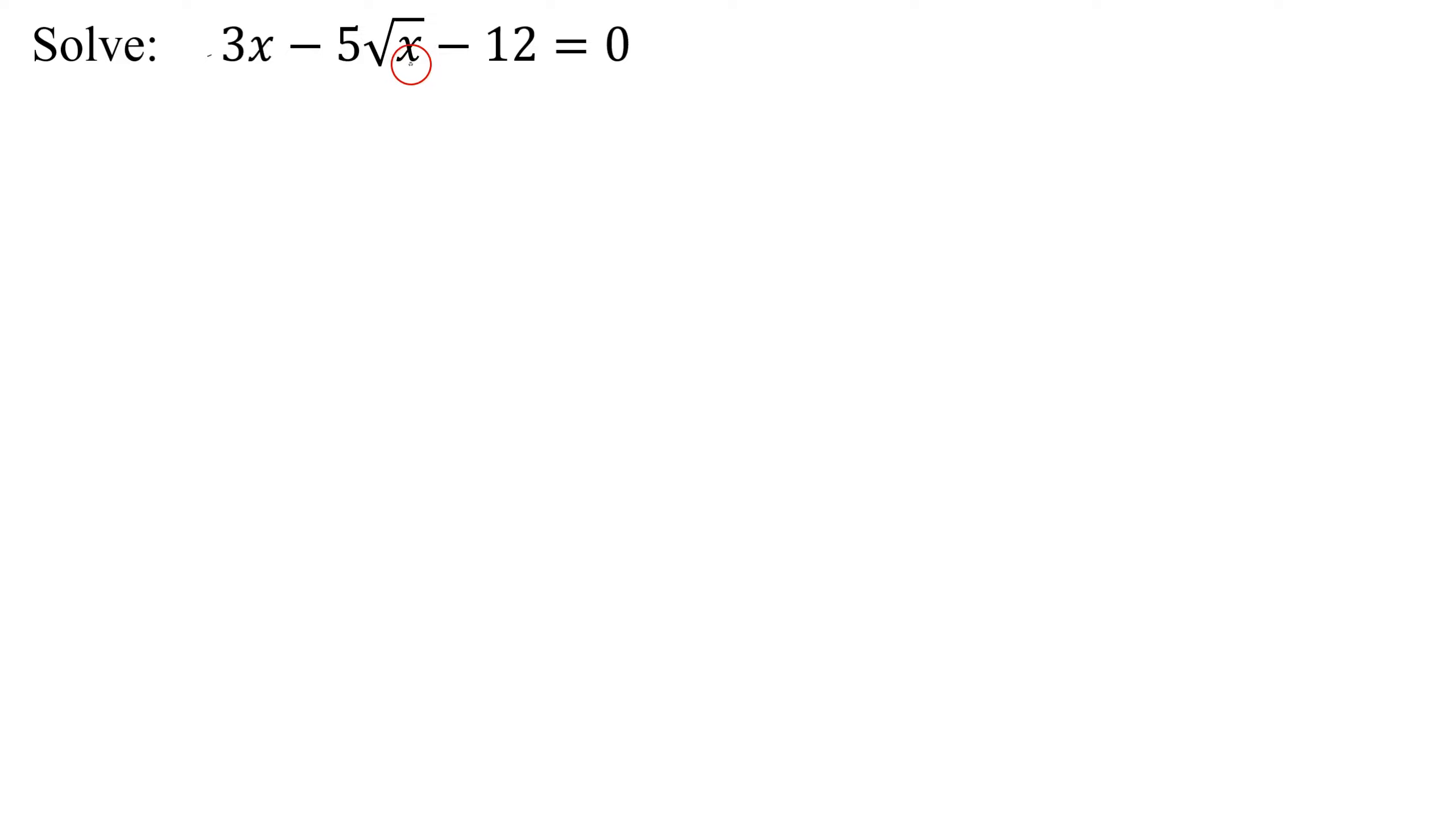There's only one square root, so I could solve it by isolating the square root and then squaring both sides. But there is another method of solving this that might be a little bit quicker. And that's if you notice that this equation is quadratic in form. So that means I have a times some quantity all squared plus b times the same quantity plus c equals 0.